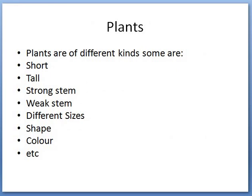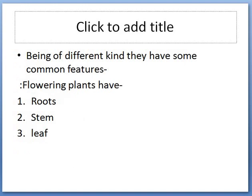If we talk about plants, plants are of different kinds. Some plants are short, some are tall. Some plants have strong stem or woody stem which is called as bark. Some plants have very weak stem and very fragile just as coriander. Some plants are of different shapes, different size, different color. But being of different kinds, they have some common features among them. For example, all flowering plants will have root, stem and leaves.